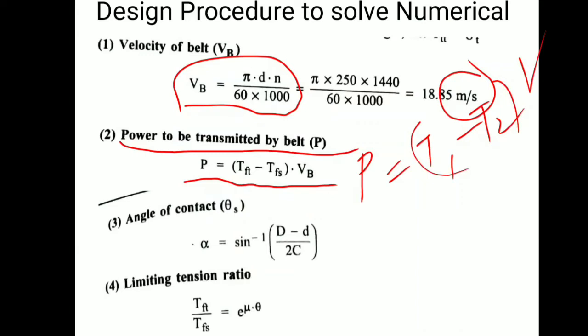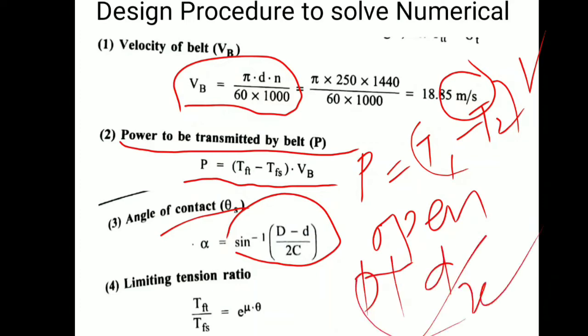Angle of contact: α equals sin inverse of (D minus d) divided by 2C. This is for open belt. If it is cross belt, then plus: (D plus d) divided by 2C. This will be the only change. So you need to mention at the time of numerical the condition.